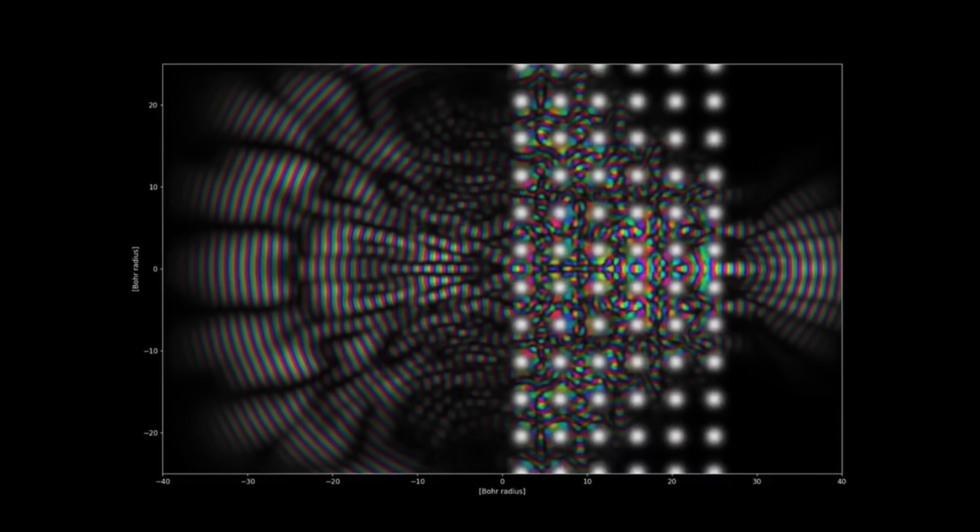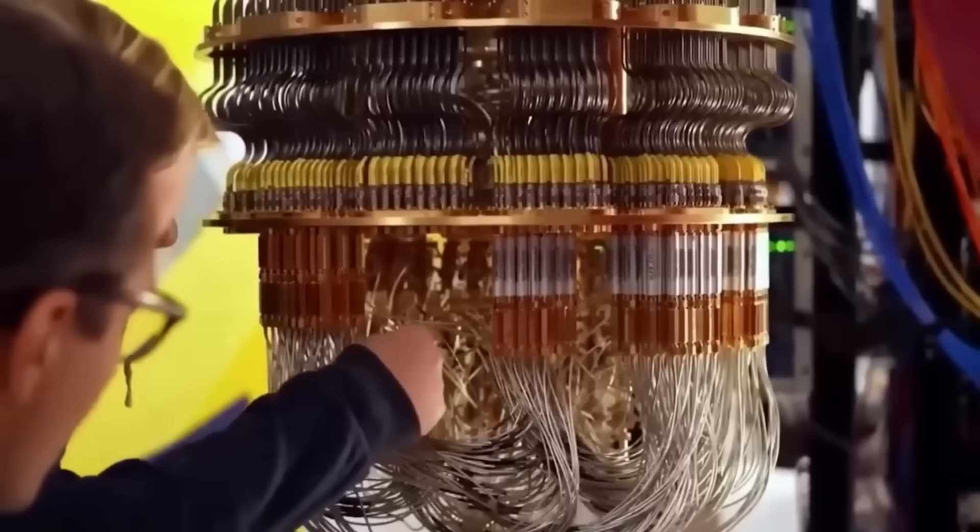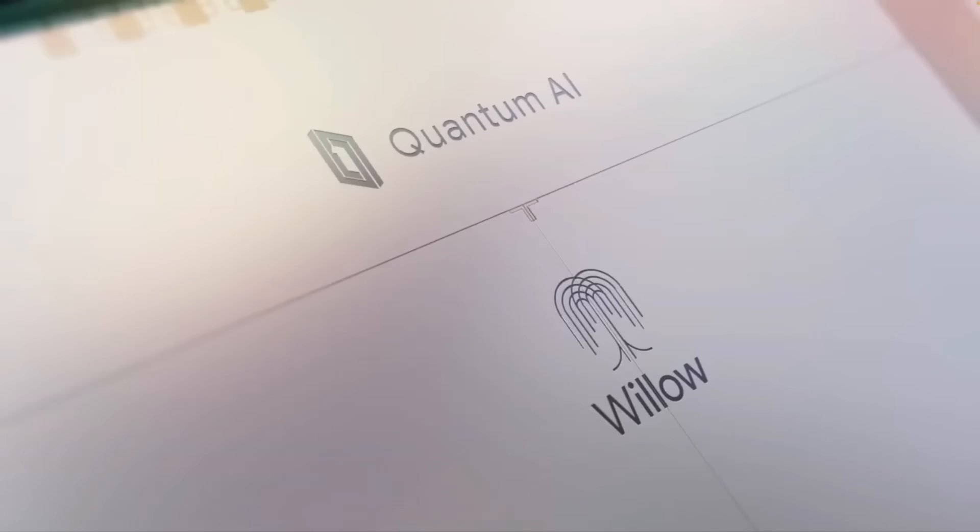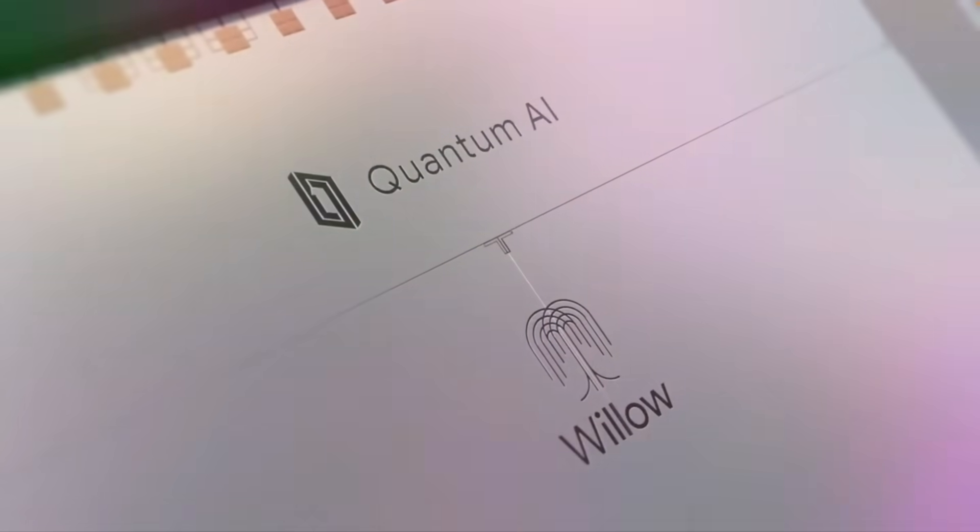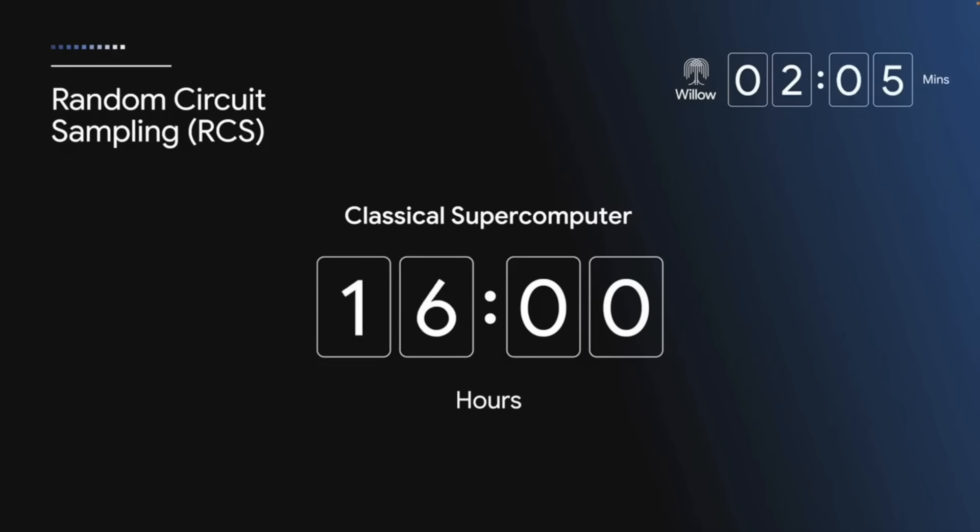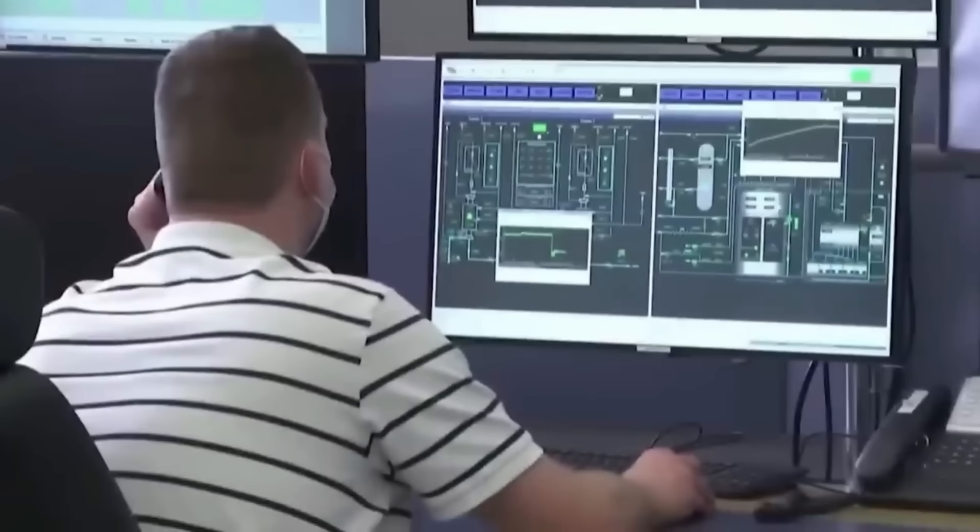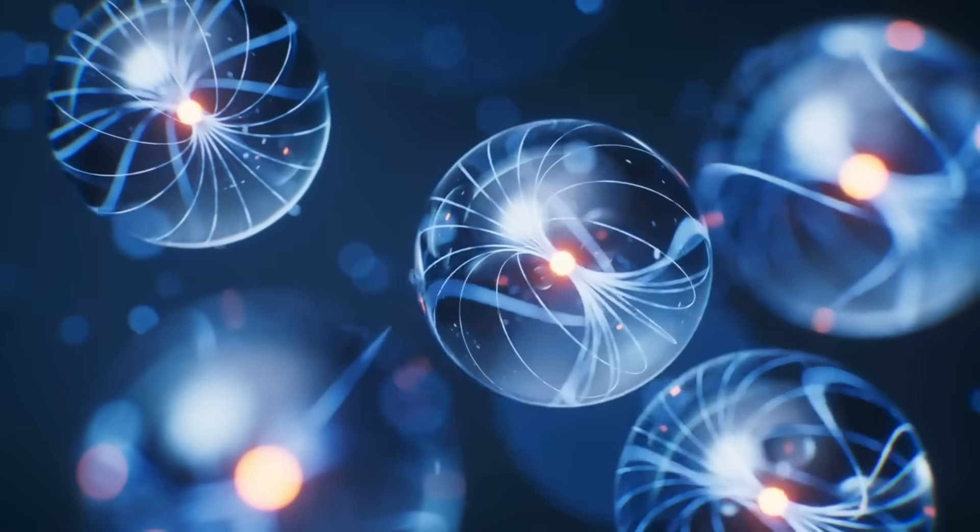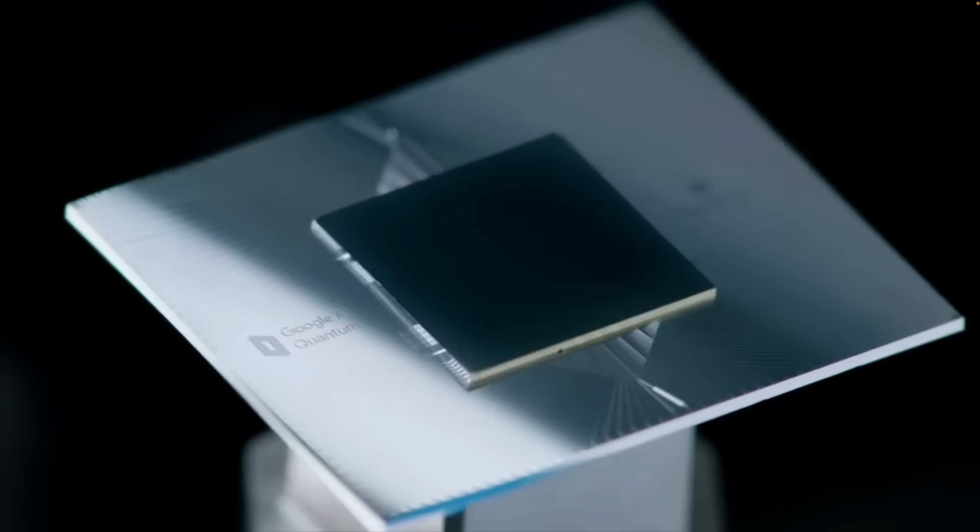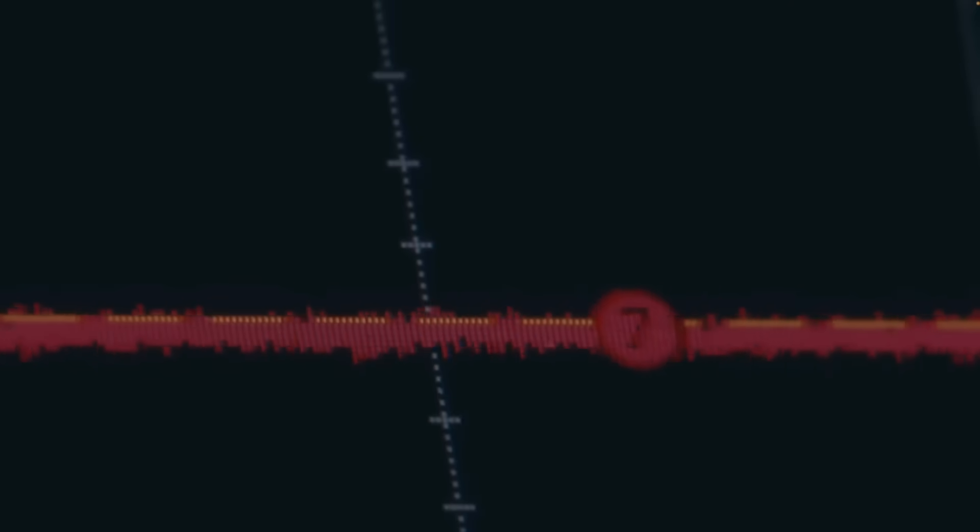NIST published final post-quantum standards in August 2024. The NSA has set a 2035 deadline for quantum resistance. Google researchers have slashed the resources needed to break RSA by 20 times. Certificate transparency logs are already tracking the early migration to quantum-resistant algorithms. Open-source projects like OpenSSH have implemented hybrid approaches combining classical and quantum-resistant methods. The signs are everywhere if you know how to read them.